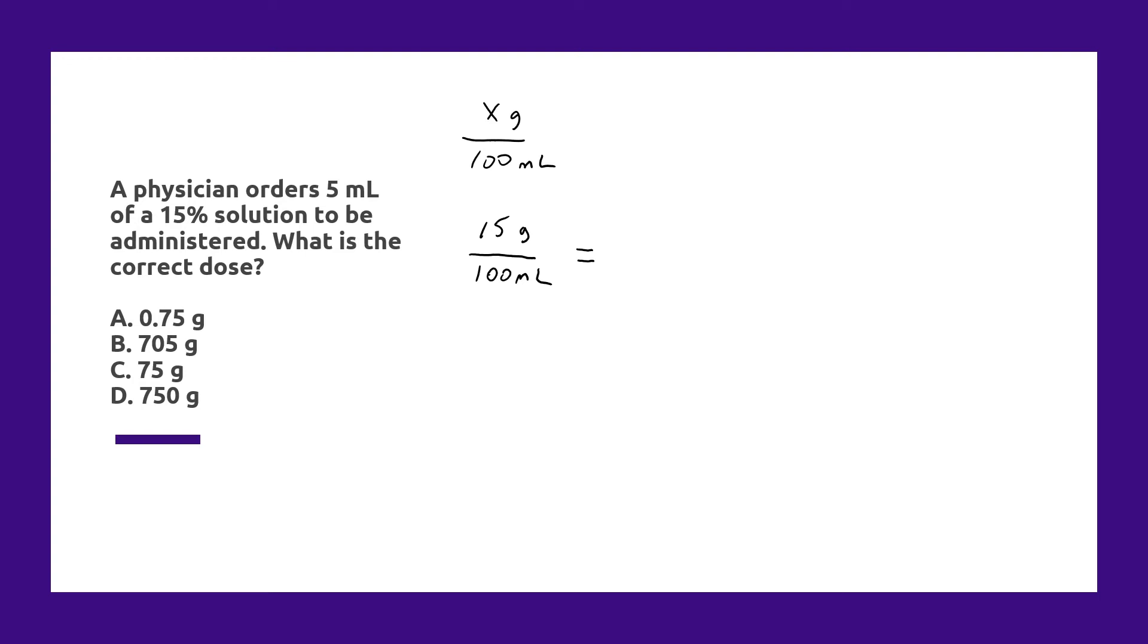So to do this we always set up a proportion with the unknown variable in the upper right hand side. So in this case it's going to be x number of grams which is what we're looking for in our answer over five milliliters. So how many grams are in five milliliters when the solution is 15 grams per 100 ml or 15%?